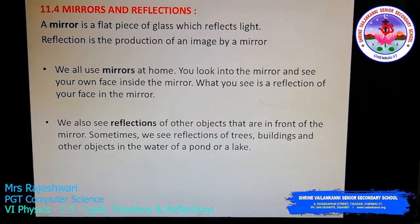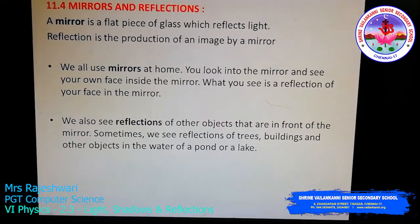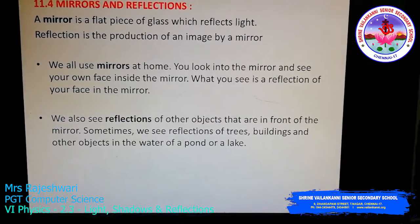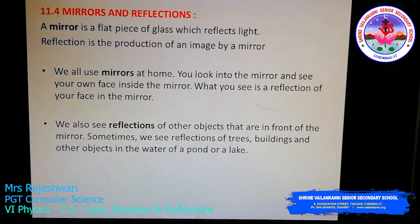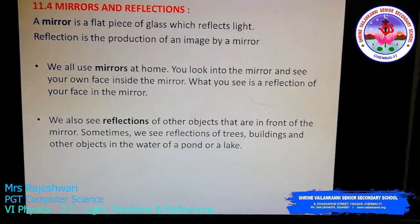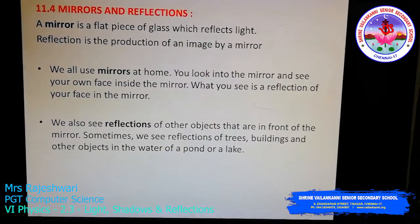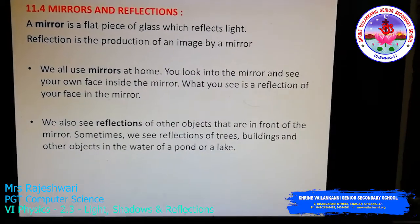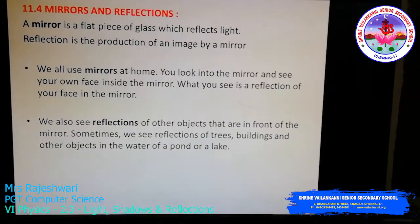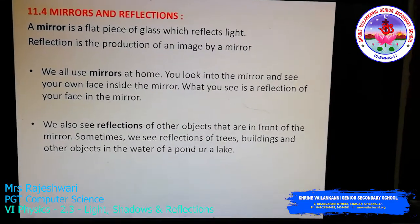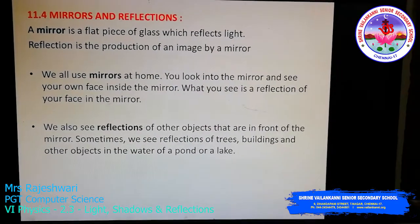What you see is the reflection of your face in the mirror. You can also see reflections of other objects in front of the mirror, like trees or buildings, and even objects reflected in the water of a pond or a lake. Objects in front of the mirror that are being reflected are called reflections.